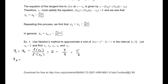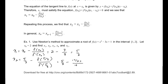Next, x₂. Plugging in the values: that will be 5 thirds minus f of 5 thirds divided by f prime of 5 thirds. f of 5 thirds is 17 over 27, and f prime of 5 thirds is 16 thirds. So that gives 5 thirds minus 17 over 27 divided by 16 over 3, which is 223 over 144.